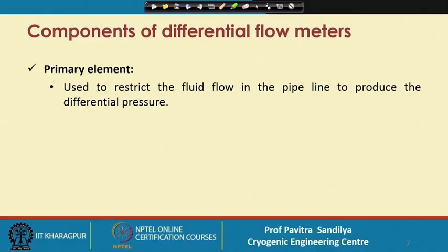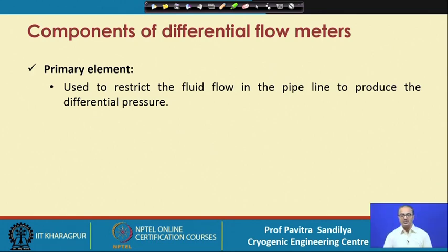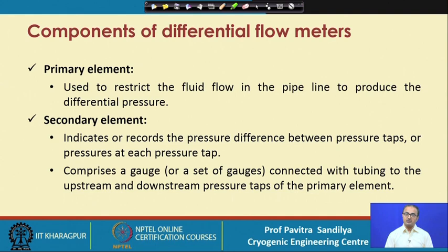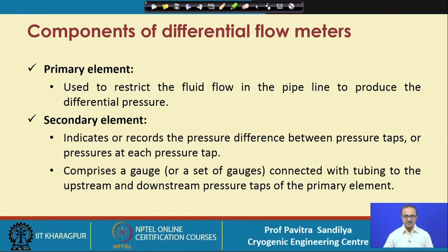We have a primary element — this is the element which restricts the fluid flow to produce the differential pressure across a finite pipe length. Then we have a secondary element, which records or indicates the delta P caused by the restriction. This delta P is measured across some pressure taps provided on the pipeline, and it consists of some kind of gauge or set of gauges.